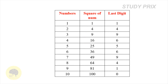The second thing we have to consider is the last digit of the square of the number. The last digits are 1, 4, 9, 6, 5, 6, 9, 4, 1, and 0.